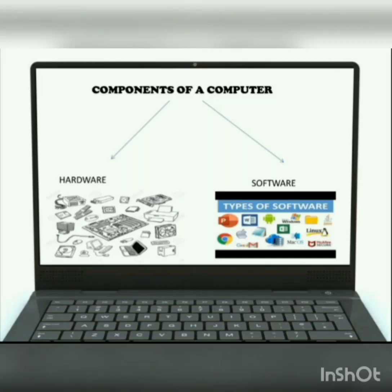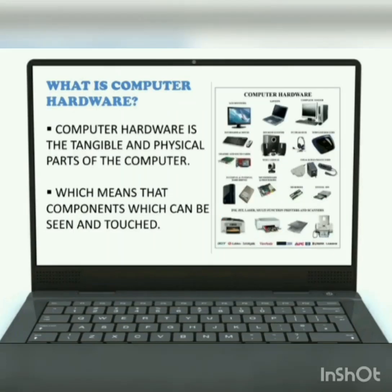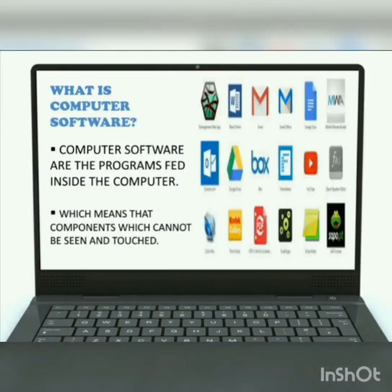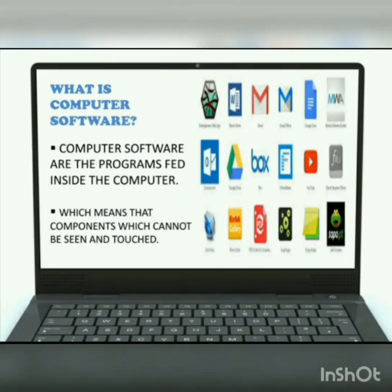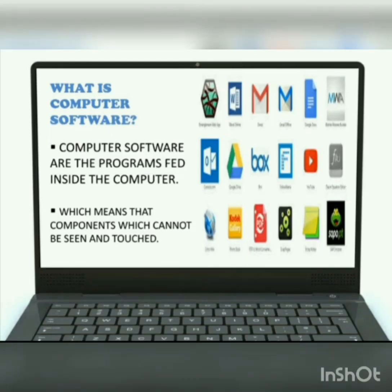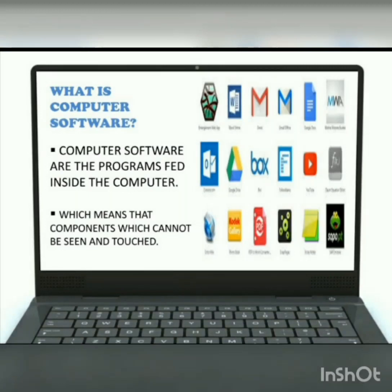So to run these hardware, there needs a program that is called software. Let's learn what is hardware in detail. A computer hardware is the tangible and physical parts of the computer. Tangible means which can be seen or touched. Kids, a car is of no use when there is no petrol. Likewise, hardware of the computer is of no use without software. Software is that part of the computer which cannot be touched or seen. These are the programs, or you can say set of instructions, that are fed inside the computer.